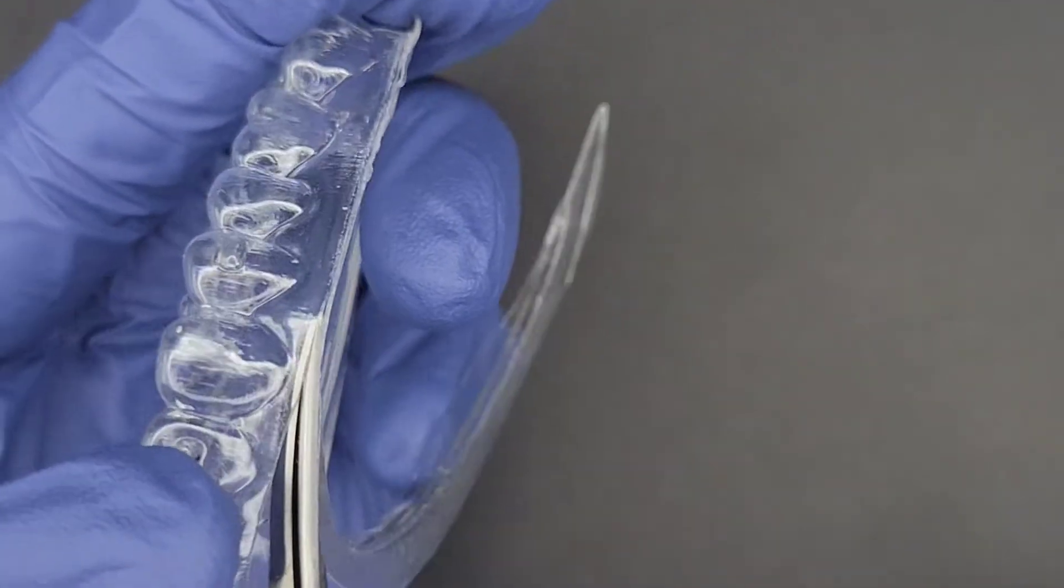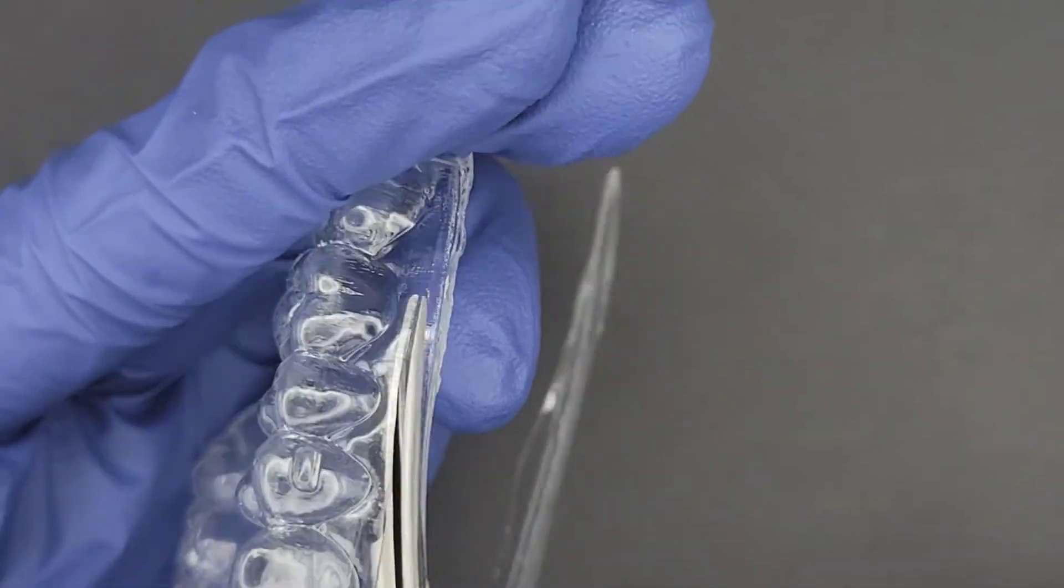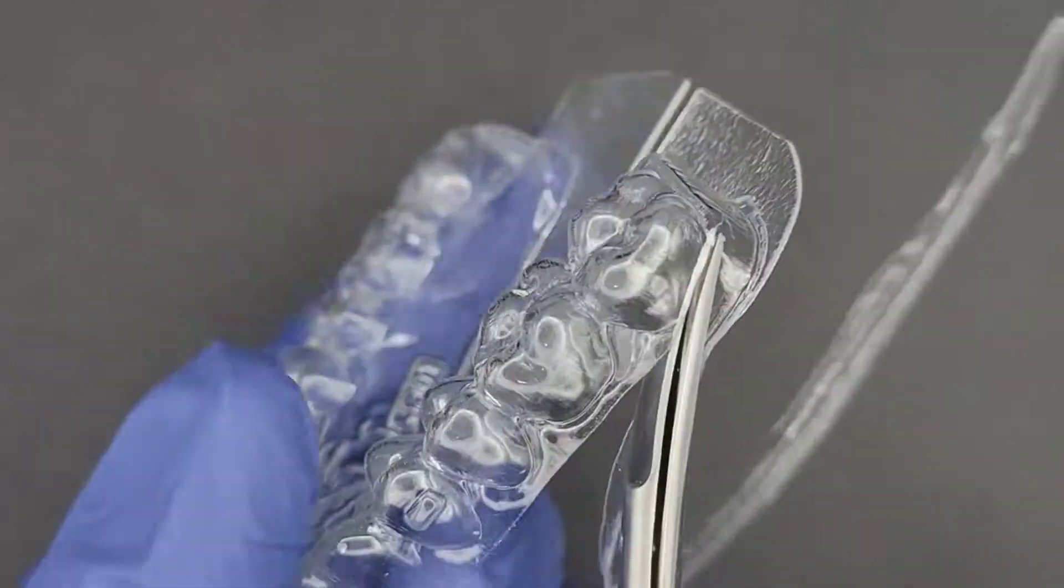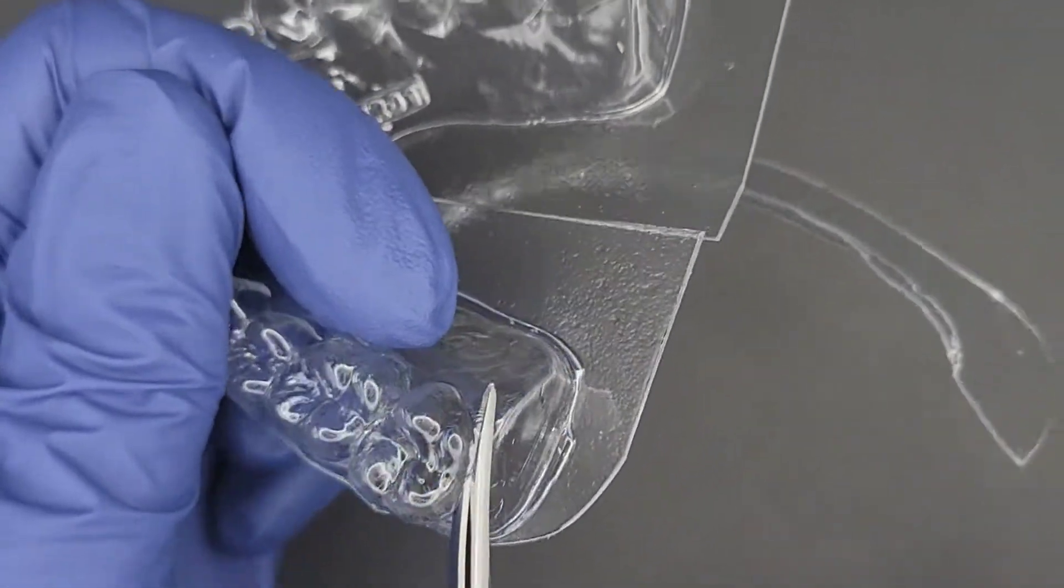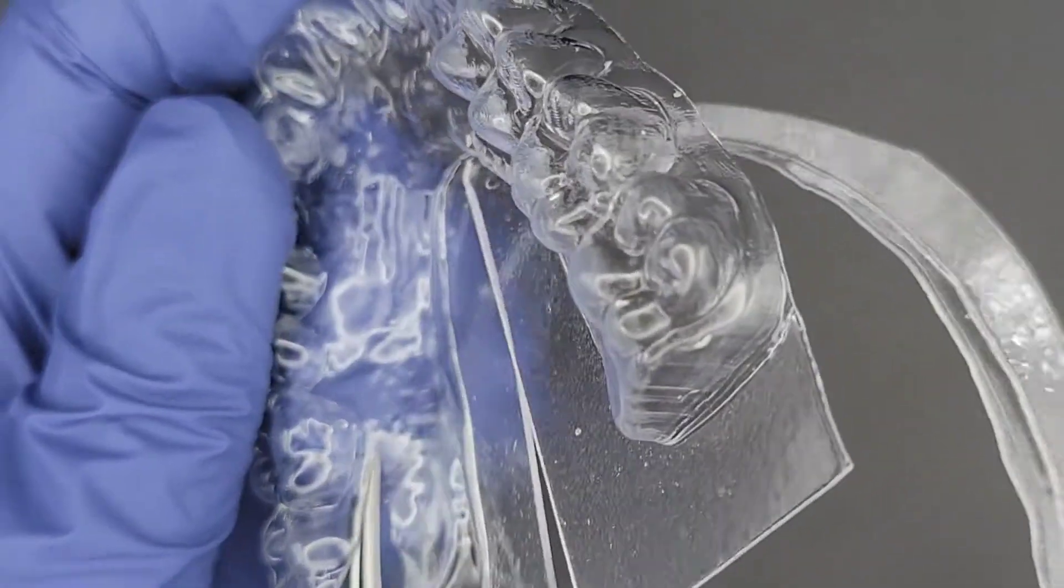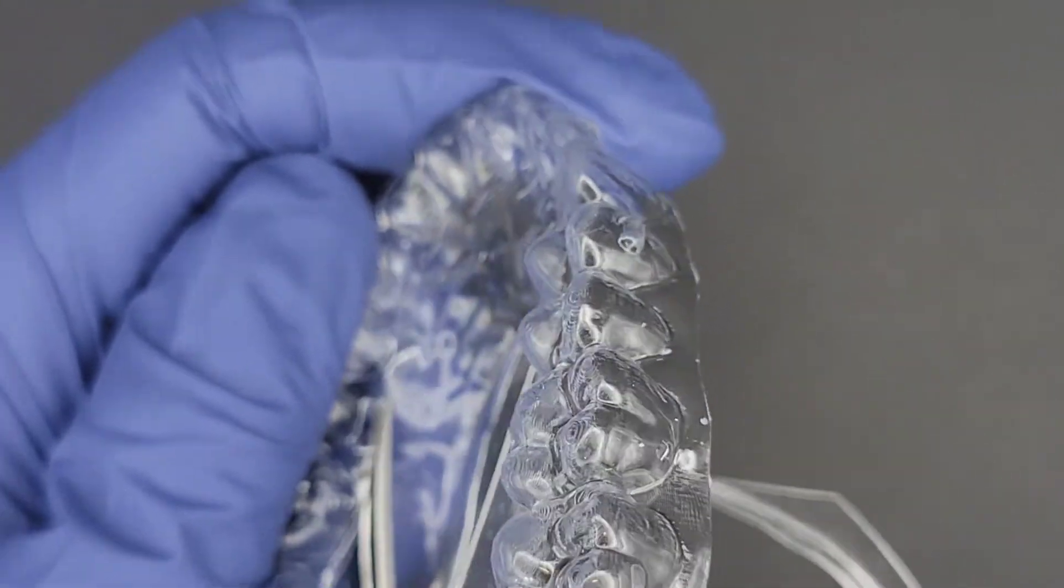Notice that the trim line is about two millimeters above the teeth. Try to be as smooth with your cuts as possible. Do not close the scissor blades completely. This will prevent having serrated edges on the aligner.